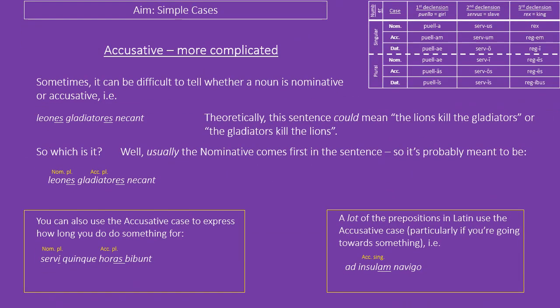With the accusative, one complication is that sometimes it can be difficult to work out whether a noun is nominative or accusative — particularly with the third declension, where the nominative plural and accusative plural endings are the same. So 'leones gladiatores necant' could mean 'the lions kill the gladiators' or 'the gladiators kill the lions,' because order isn't the deciding factor. But normally the nominative comes first in the sentence. So we can take a reasonable guess that leones is nominative and therefore it's the lions that kill the gladiators. That is not an absolute rule, but in general nominative comes first.